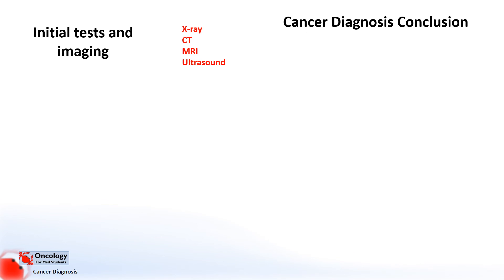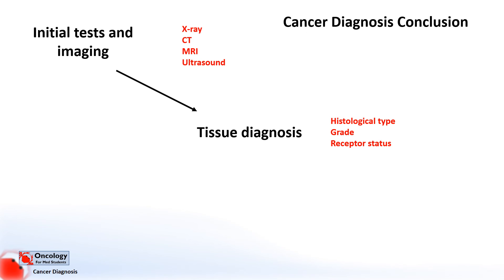In summary, in the diagnosis of cancer, patients will first go through initial tests and imaging, which might include x-ray, CT, MRI, or ultrasound. We then need to get a tissue diagnosis from a biopsy — a histopathologist looks under a microscope to determine the type of tumour, its grade, and receptor status. Once the cancer has been confirmed, we go on to staging, which may involve further imaging to determine exactly the extent of the cancer. Thanks for listening — I hope you found this useful.